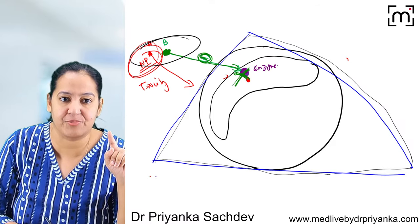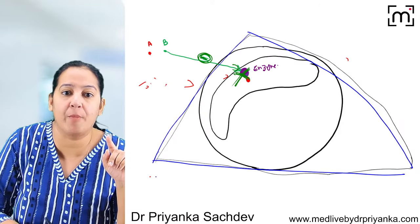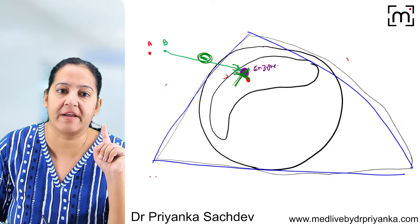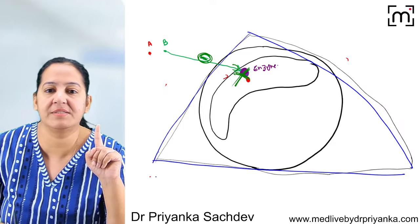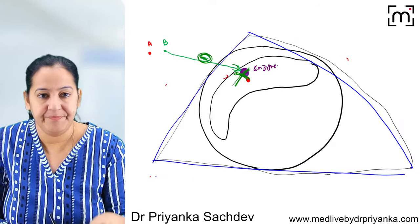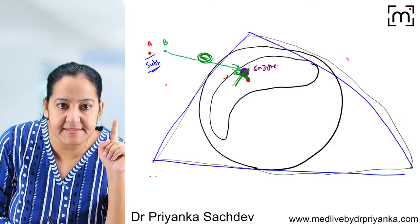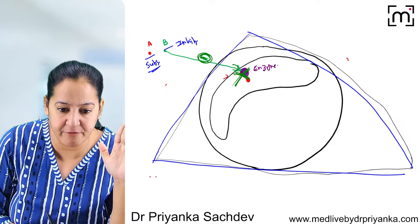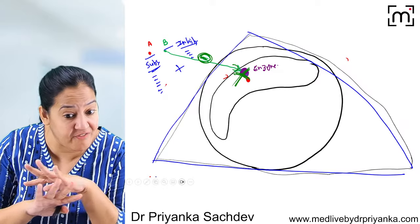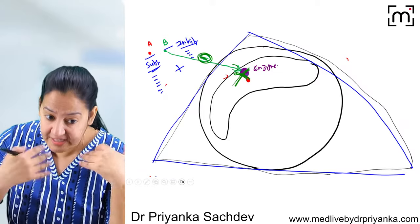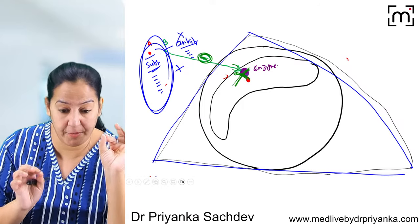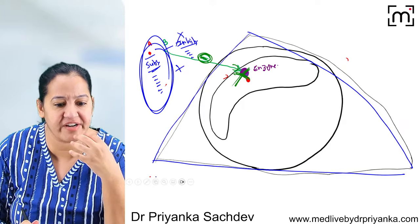There are two roles: the substrate drug (red) and the inhibitor drug (green). Never give this deadly combination, as toxicity of the substrate drug will result — severe adverse effects or even death. Being a doctor, you must remember these contraindicated combinations. These are the drugs that are never given together.